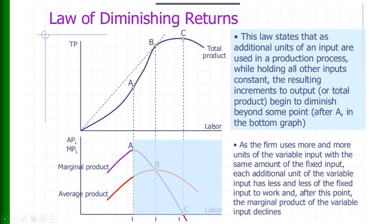The Law of Diminishing Returns states that as additional units of an input are used in the production process while keeping all other inputs constant, the resulting increments to output or total product begin to diminish beyond some point — that is, after point A in the diagram. As the firm uses more and more units of the variable input with the same amount of the fixed input, each additional unit of the variable input has less and less of the fixed input to work with, and after this point the marginal product of the labor input declines.